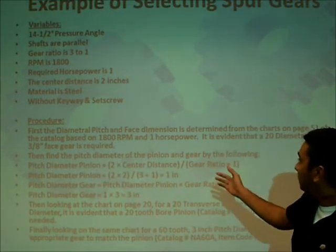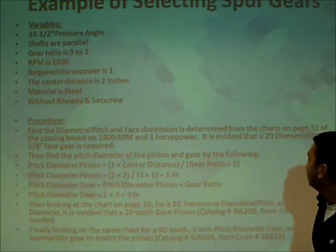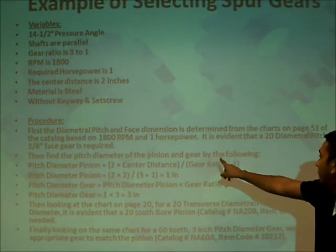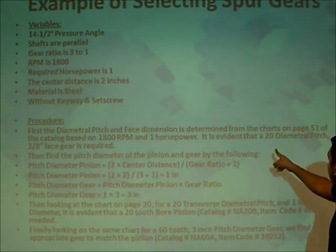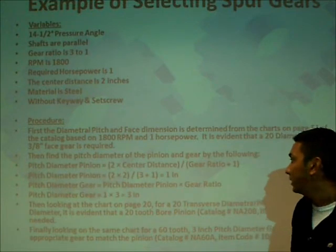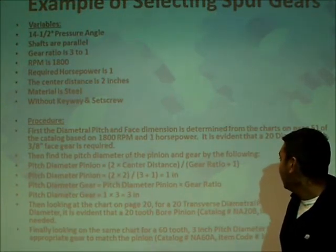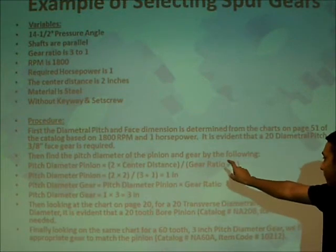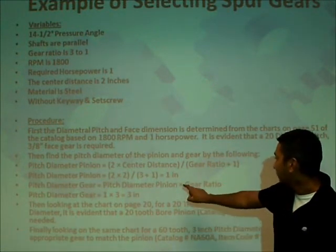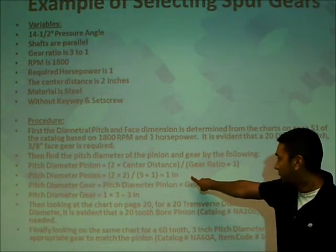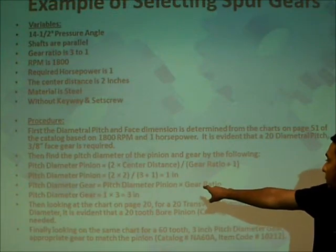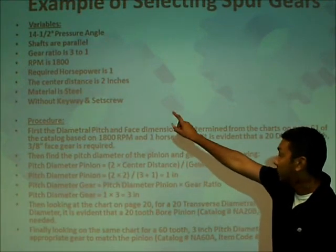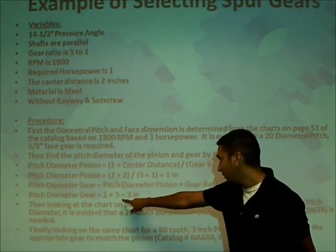For the procedure, first you find the diametral pitch and the face dimension, which are determined by the charts on page 51 of the catalog, based on 1800 RPM and 1 horsepower. For this example, it was evident that a 20 diametral pitch, 3-inch face gear was required. Then you find the pitch diameter of the pinion by the equation: 2 times the center distance divided by the gear ratio plus 1. In this example, the pitch diameter of the pinion is 1 inch. The pitch diameter of the gear equals the pitch diameter of the pinion multiplied by the gear ratio — since the ratio is 3 to 1, you get 3 inches.